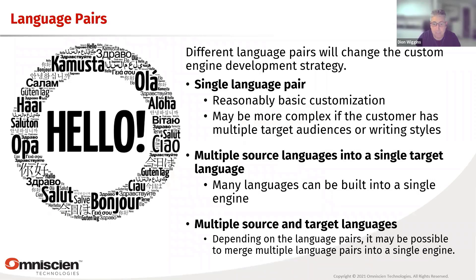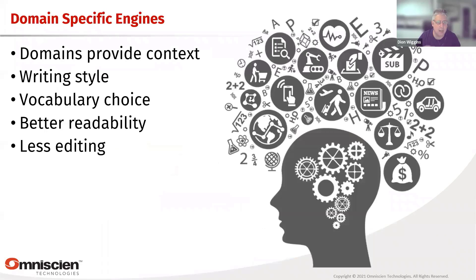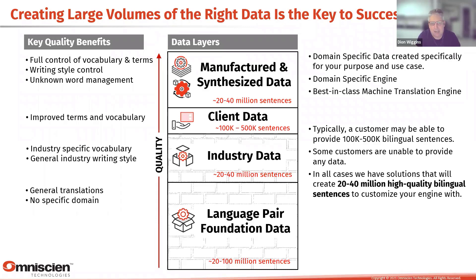We have to pick our language pairs: single, multiple source into single target, or multiple source and target languages. Domain-specific engines need vocabulary choices for better readability. Creating an engine uses a lot of data. A typical engine today will have 20 to 100 million sentences as language pair foundation data, 20 to 40 million as industry data such as automotive, then we add customer data and create another 20 to 40 million sentences for you. That's a significant amount of data, considering most customers don't have anywhere near those volumes — so we go out and create those.